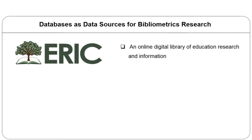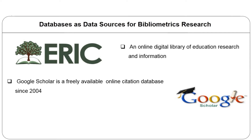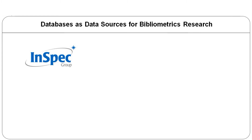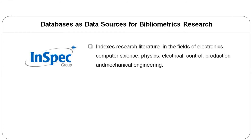One of the upcoming data sources popularly used by bibliometricians is Google Scholar, started in 2004. It is popular because it is freely available and indexes different forms of scholarly information beyond just journals. InSpec is another database with 13 million abstracts, providing specialized indexing to quality research literature in electronics, computer science, physics, electrical, control, production and mechanical engineering since the 1960s. InSpec's coverage is said to be quite comprehensive in nature.